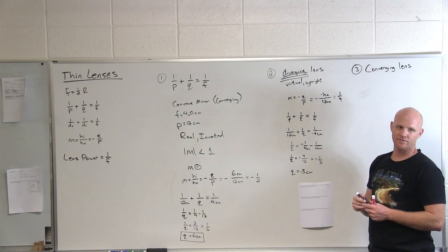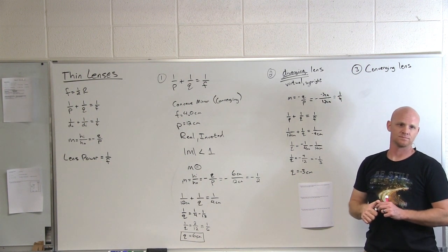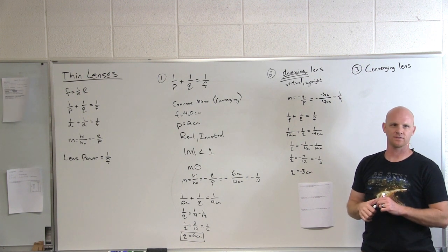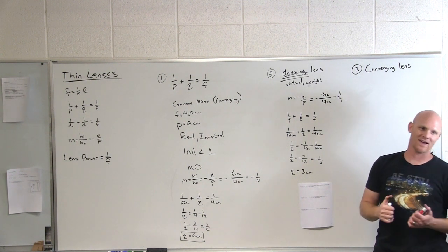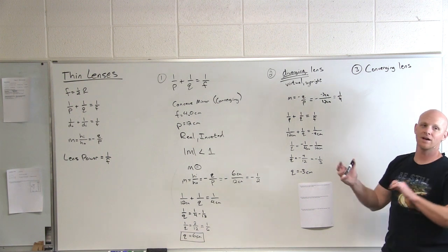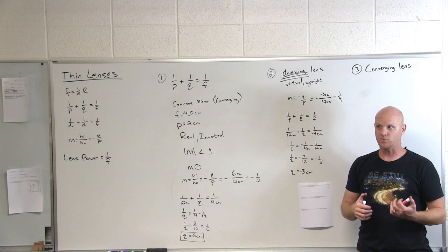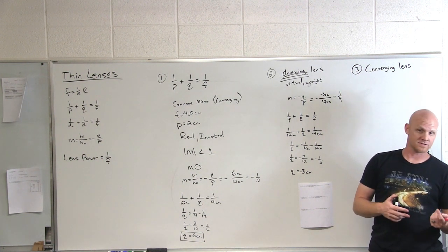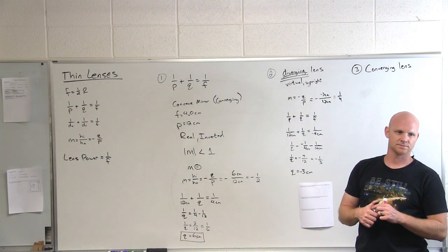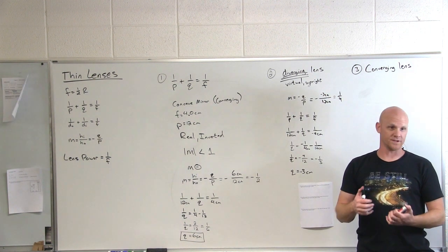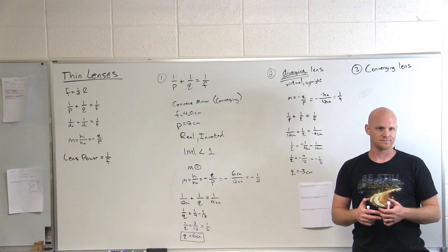Number three is dealing with a converging lens. With a converging lens, do the light rays converge? Sometimes yes, sometimes no — it depends on where the object is. With the converging lens or mirror, you need to know if you're beyond the focal distance or within it. If you're beyond the focal distance, light rays really will converge and you get a real, inverted image. If you're closer than the focal distance, light rays won't converge and you get a virtual, upright image.